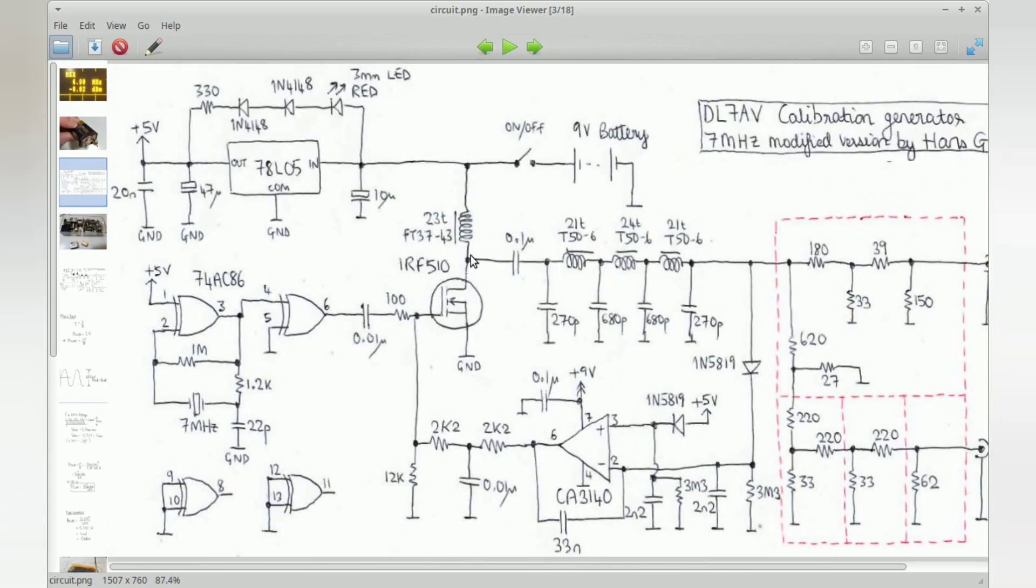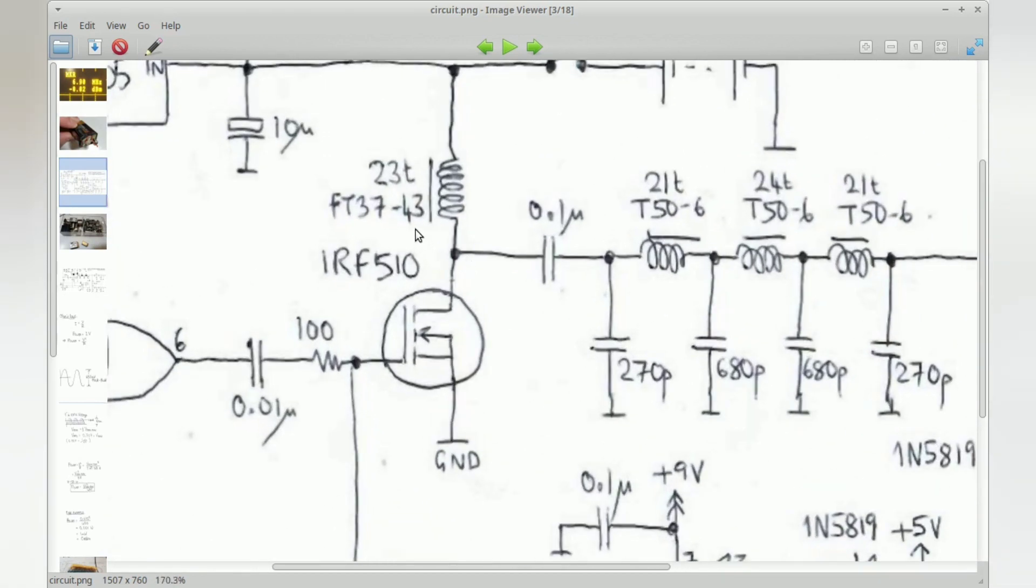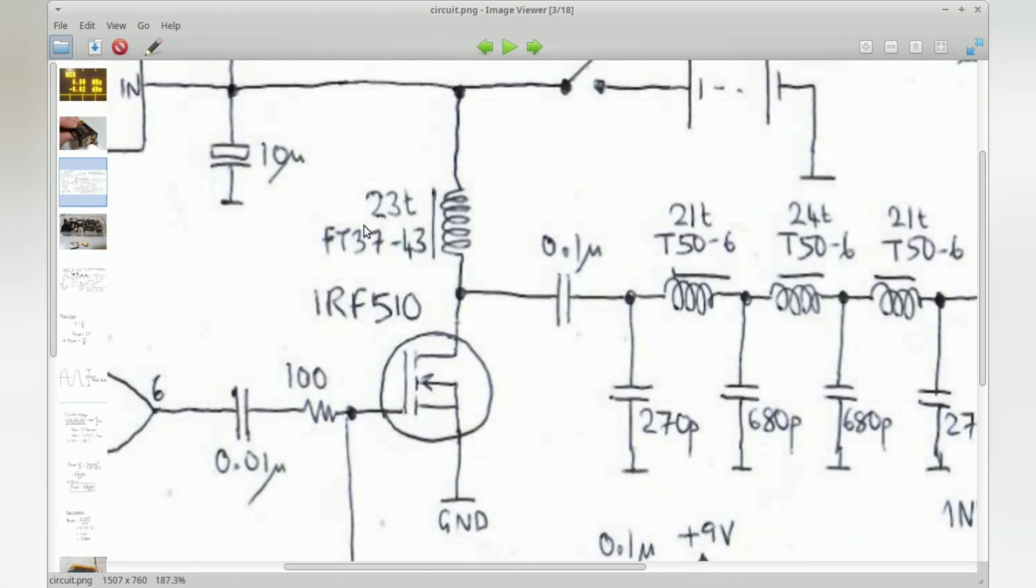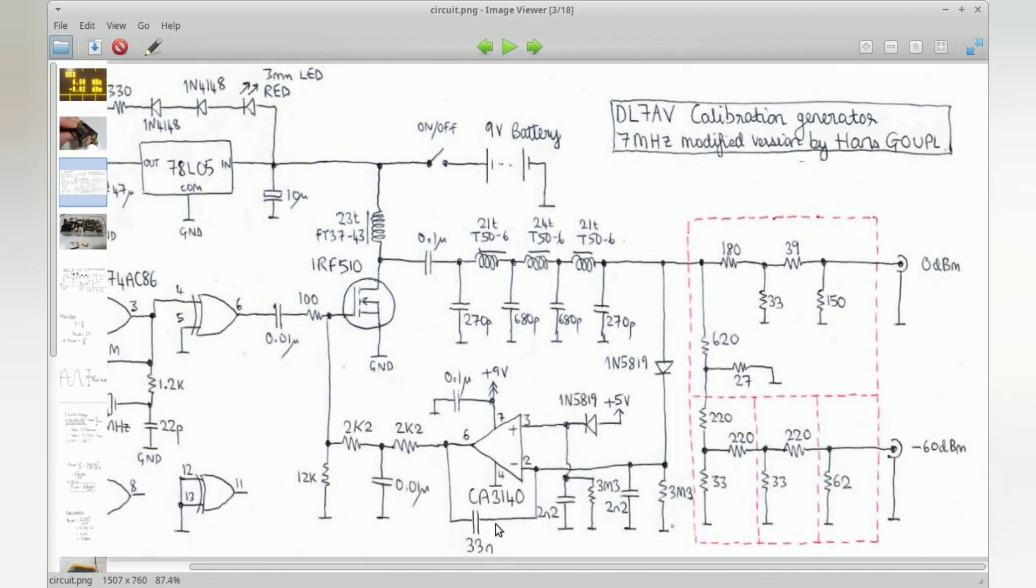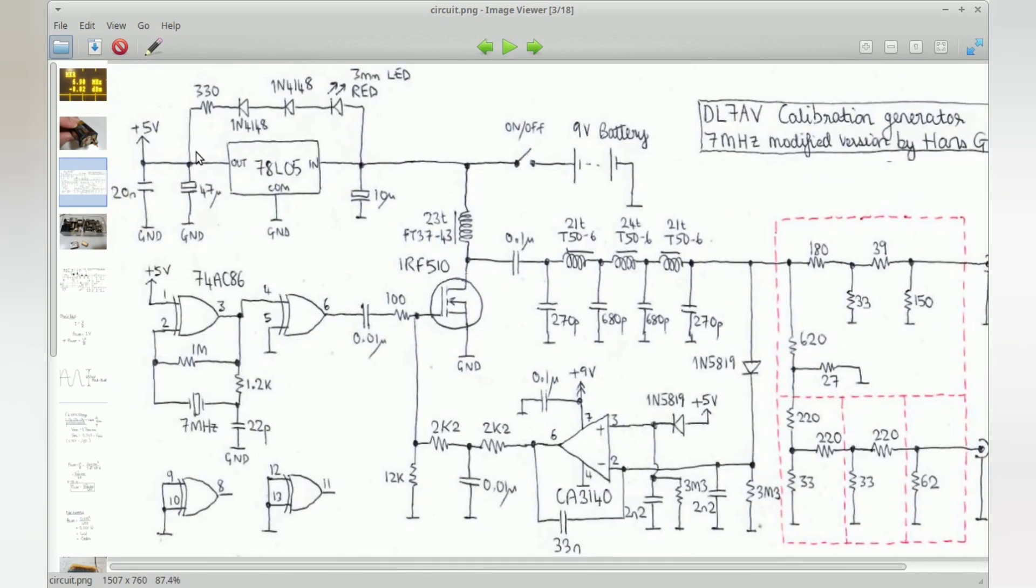The next change I made was in the amplifier circuit. I wasn't happy with the output of the original circuit. I just put a choke here in the gate circuit of the RF510. 23 turns is not critical, it just happened to be one already wound in the junk box. I followed that with a 7 element low pass filter, the QRP labs low pass filter kit built ugly style.